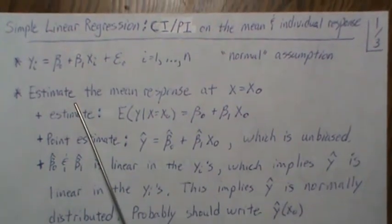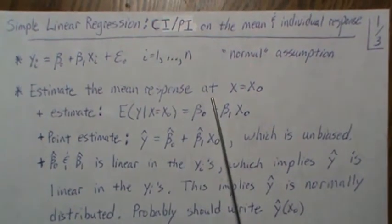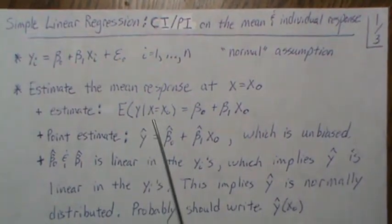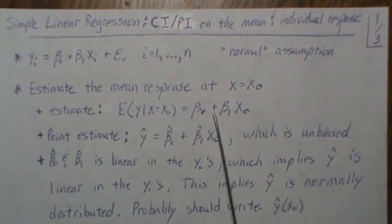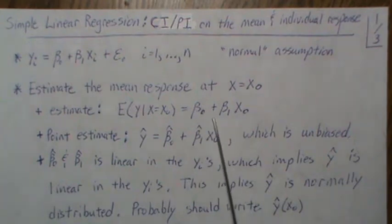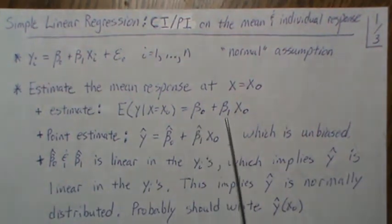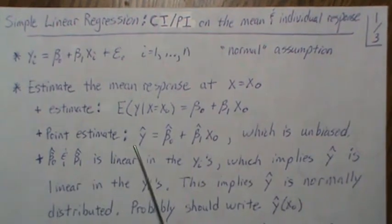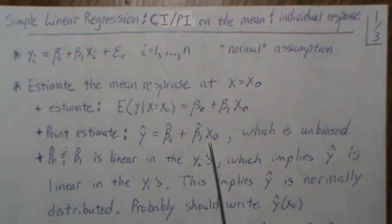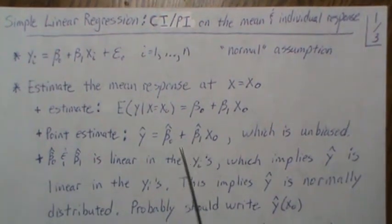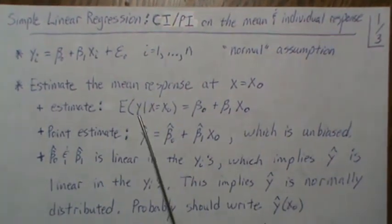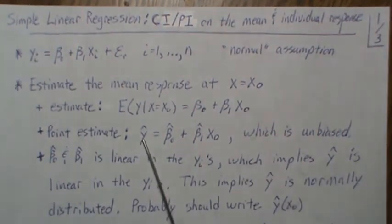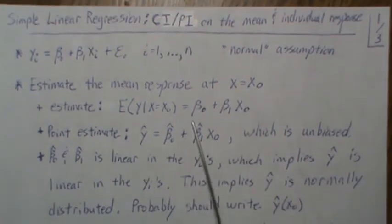To develop a confidence interval, we want to estimate the mean response at a given x, which we'll call x₀. So we want to estimate the average y when x equals x₀. This is the population regression line, but since those are population parameters we don't know them. A good point estimate would be the regression line — plugging in x₀ and looking at the value of the least squares line gives us a good point estimate for the average y. This is also unbiased: if we take the expected value of ŷ, these are unbiased estimates, so we get our population line back.